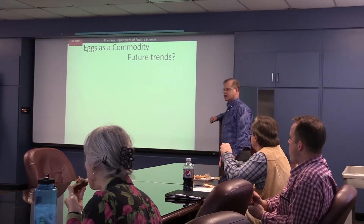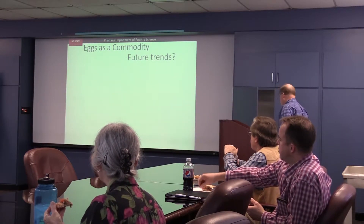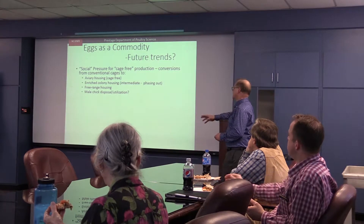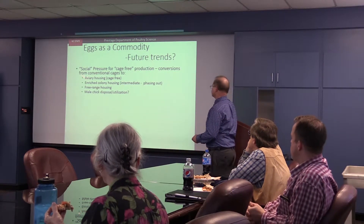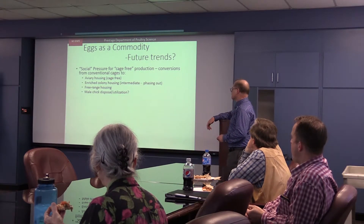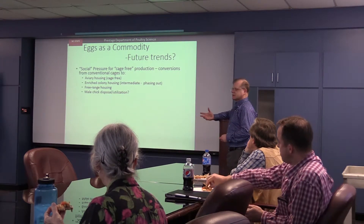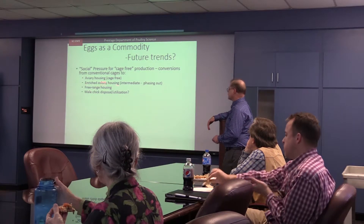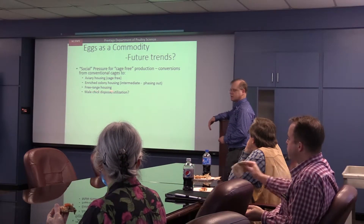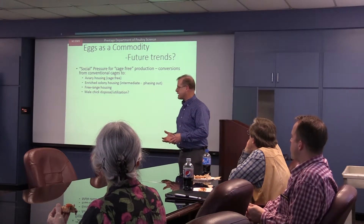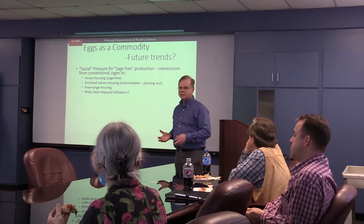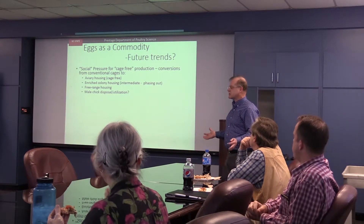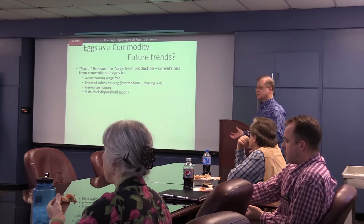Eggs as a commodity — what are the future trends right now? What pressures do we have? We have social pressures for cage-free production: conversion from conventional cages to aviary housing, also called cage-free. Enriched colony housing — I'm viewing that as intermediate because it's being phased out and pushed for more cage-free. Free range housing. Male chick disposal — we don't talk about that much because it's not a pleasant subject. We produce a lot of male chicks that the industry doesn't know what to do with. That is going to become a bigger issue in the future.